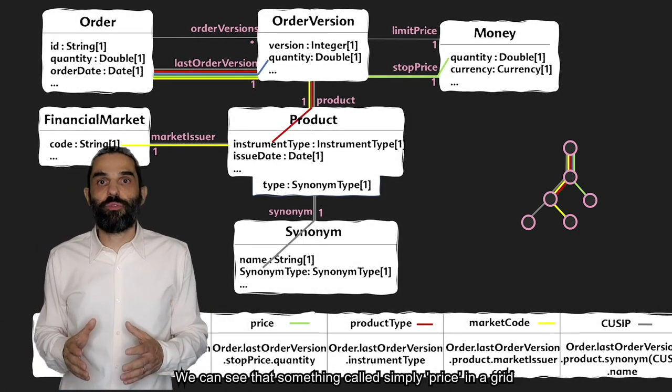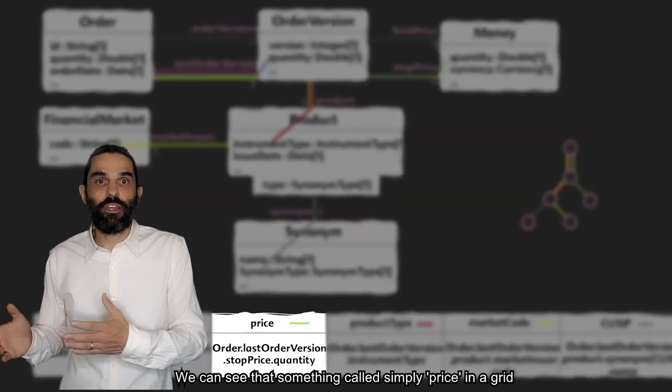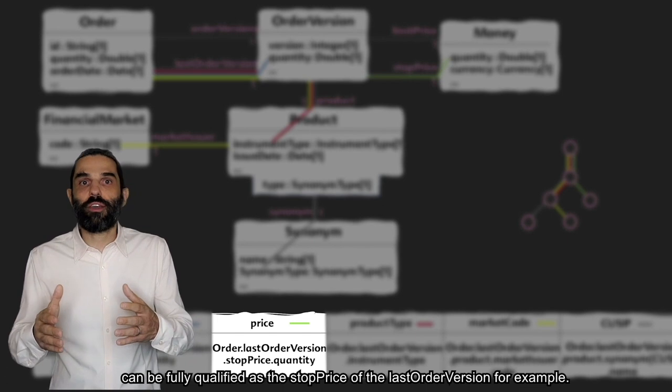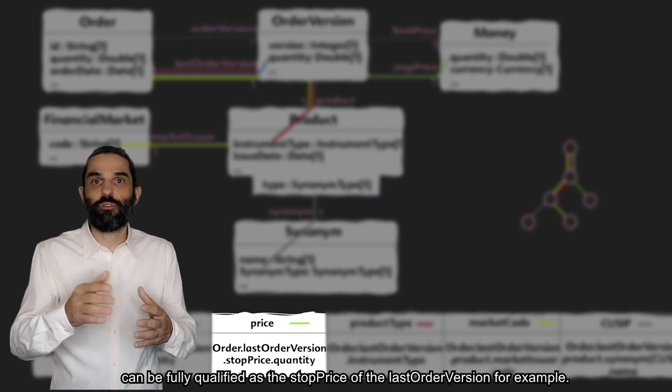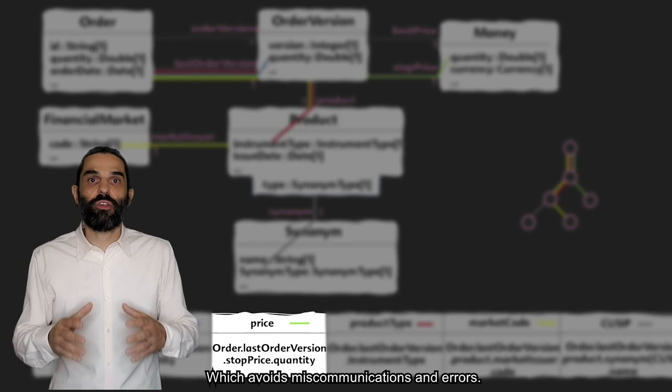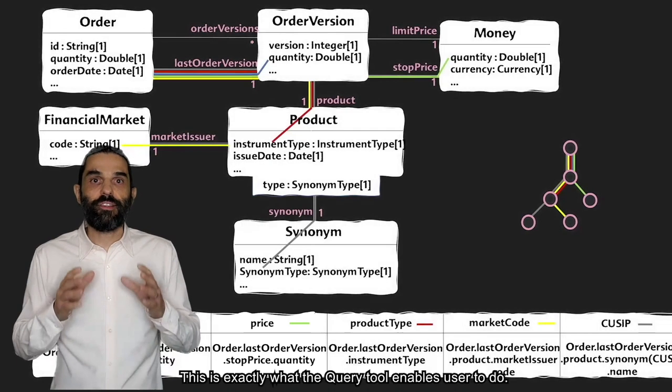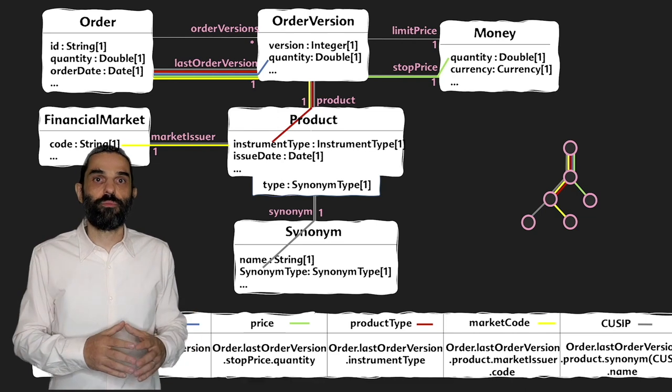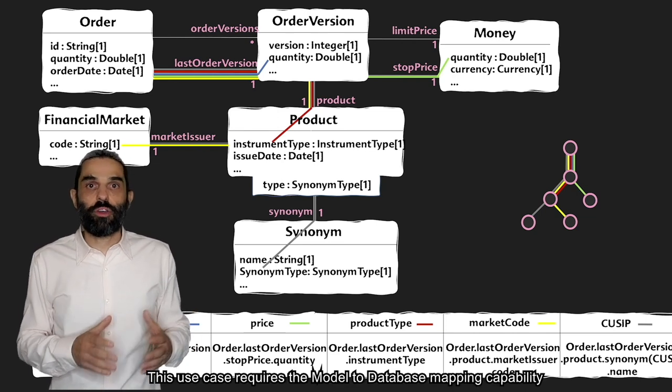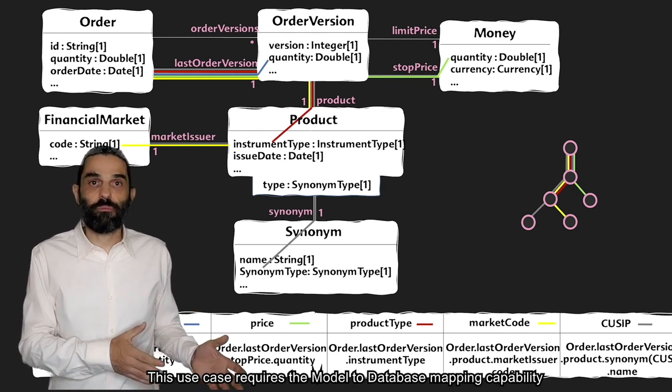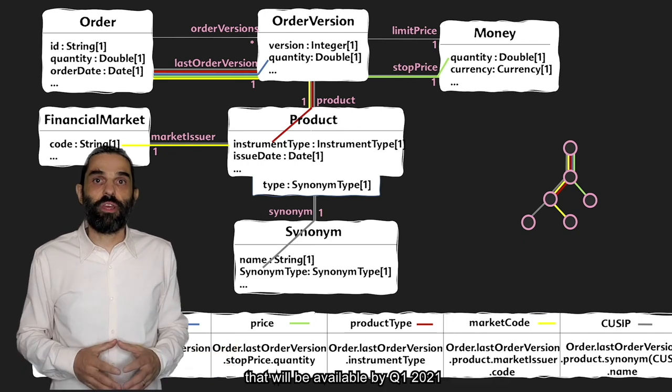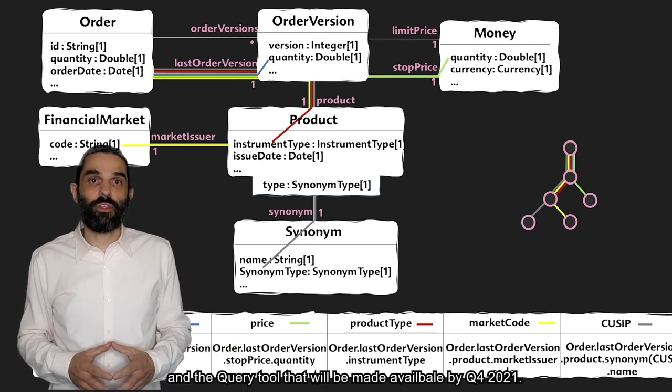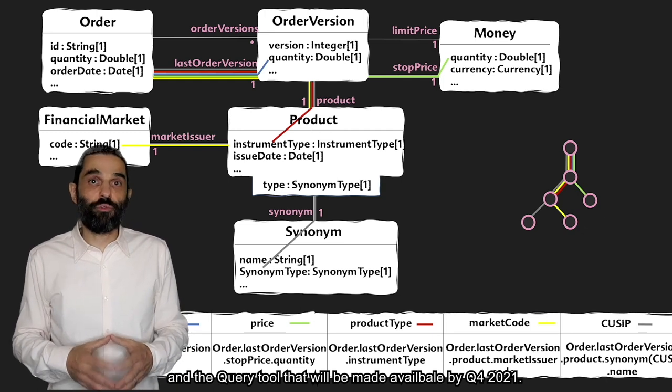Now that we have a model, users can easily access information by walking the graph and they find a tree that univocally qualifies the information. We can see that something called simply 'price' in a grid can be fully qualified as the stop price of the last order version, for example, which avoids miscommunications and errors. This is exactly what the Query tool enables users to do. This use case requires the model-to-database mapping capability that will be available by Q1 2021 and the Query tool that will be made available by Q4 2021.